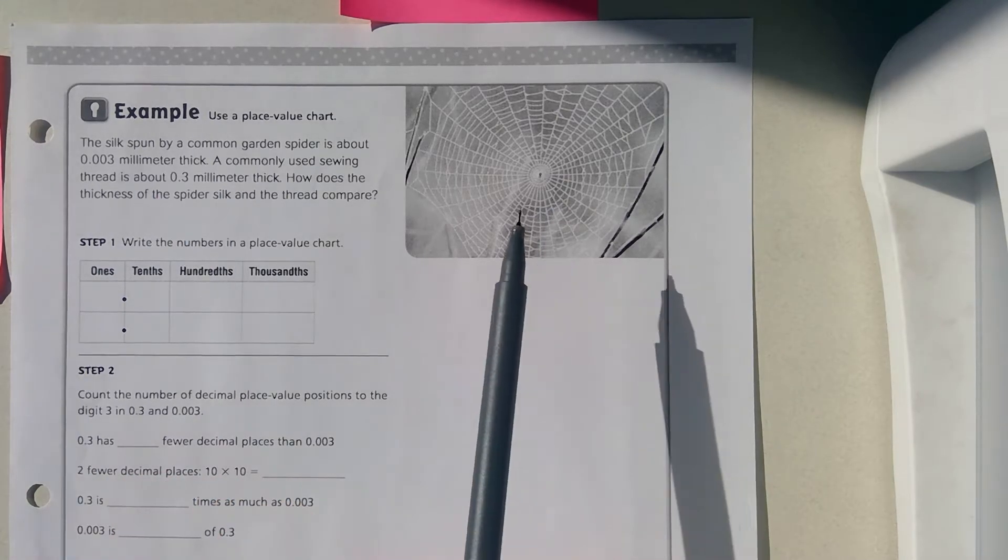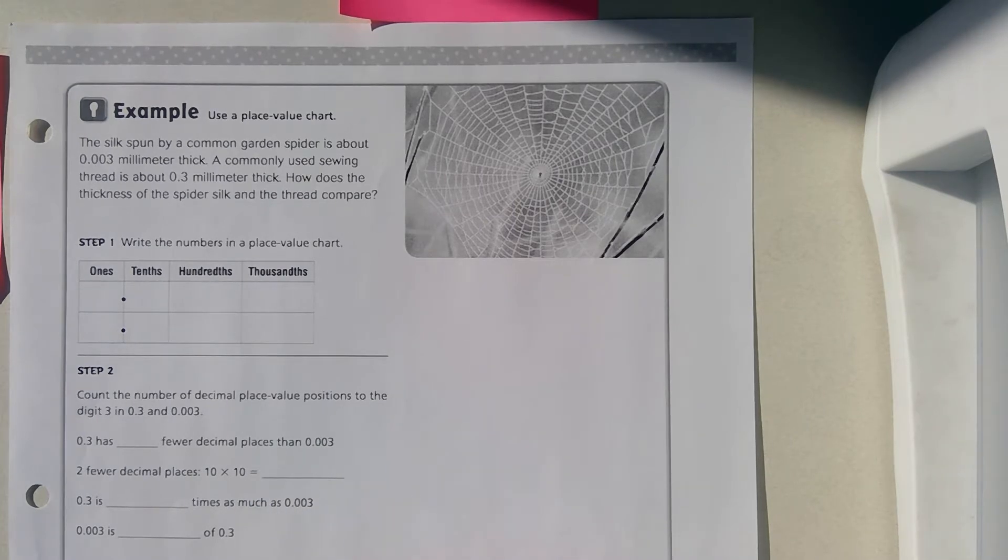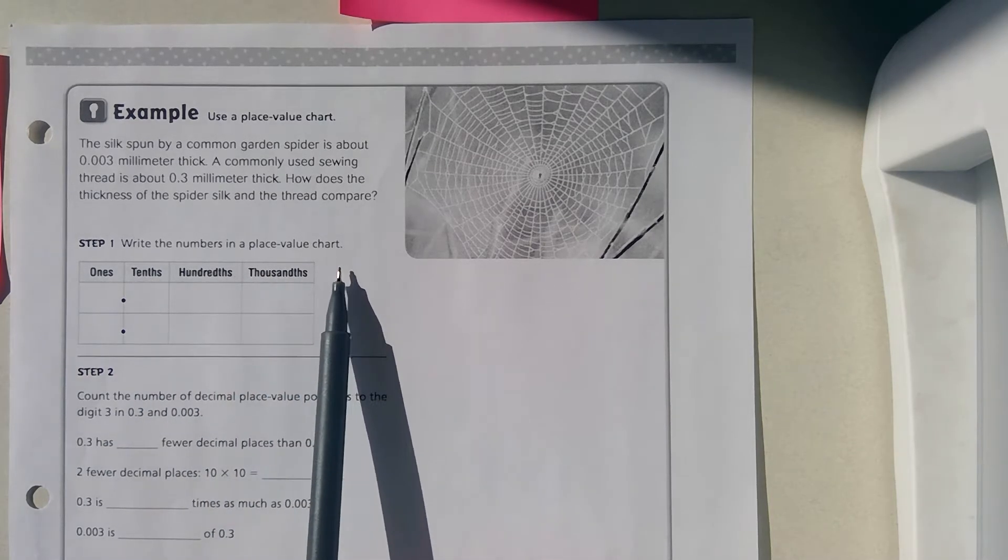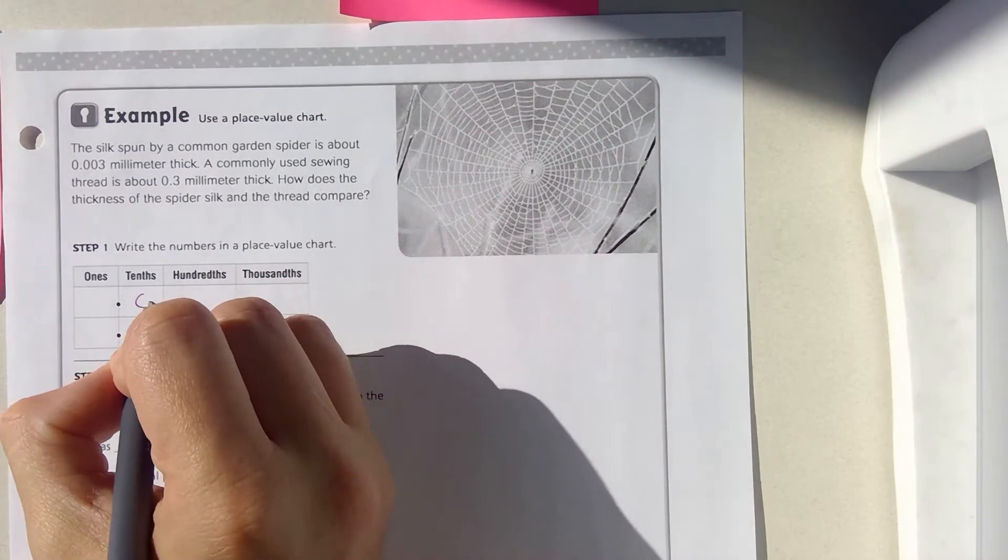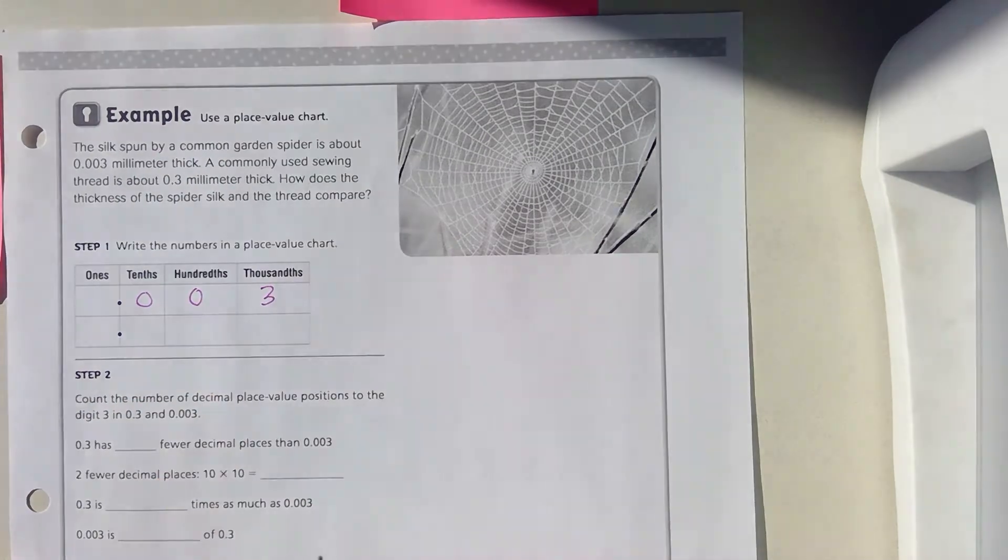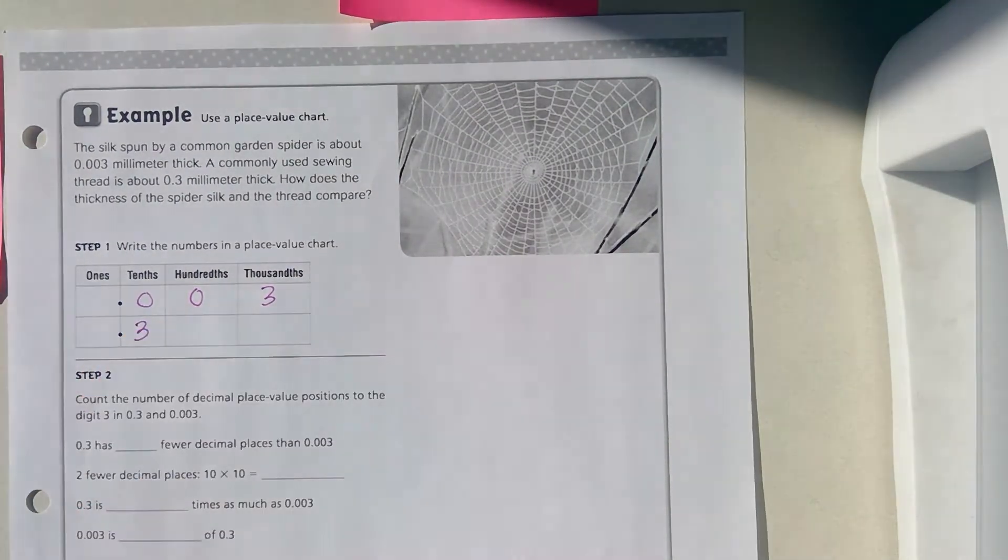Here's my example. We're going to use this place value chart. The silk spun by a common garden spider is about three thousandths of a millimeter thick. A commonly used sewing thread is about three tenths of a millimeter thick. How does the thickness of the spider silk and the thread compare? Write the numbers in the place value chart. The spider silk is three thousandths, whereas the sewing thread is three tenths.